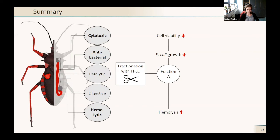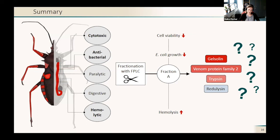We fractionated the venom with FPLC, and we found especially one fraction, the fraction A, which had significant effects on cell viability, E. coli growth, and hemolysis. We found four main proteins in this fraction or protein classes: the gelsolin, venom protein family 2 proteins, trypsins, and redilysins. However, we cannot say which proteins are responsible for the observed effects, but I hope that I can soon tell you more about that.